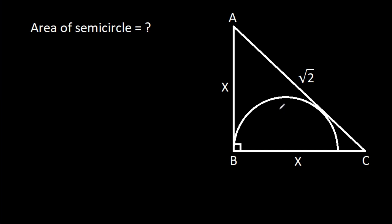In this video, we have been given a semicircle inside a right angle. AB is x, BC is x, and AC is root 2. We have to find the area of the semicircle.